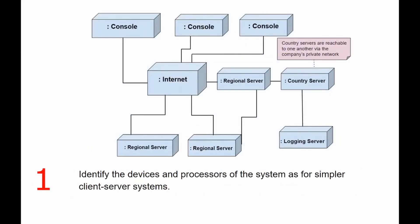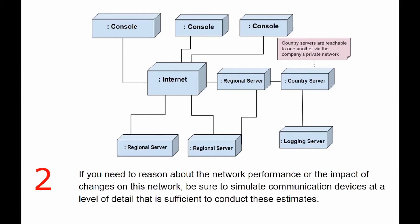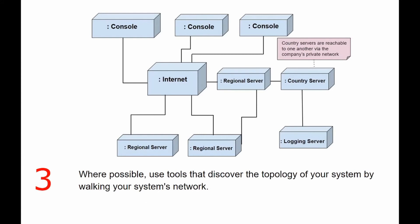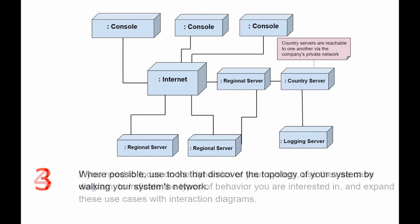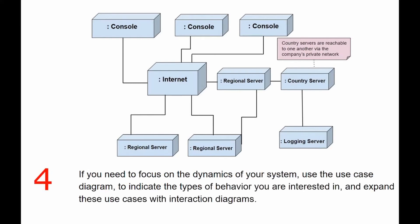Here are the steps you will need to take when modeling a distributed system. Identify the devices, processes, and nodes of the system as for simpler client-server systems. If you need to reason about network performance or the impact of changes on the network, be sure to simulate communication devices at a level of detail sufficient to conduct these estimates. Pay particular attention to logical groups of nodes that you can specify with packages. Where possible, use tools that discover the topology of your system by walking your system's network. If you need to focus on the dynamics of your system, use the use case diagram to indicate the types of behavior you are interested in, and expand these use cases with interaction diagrams.